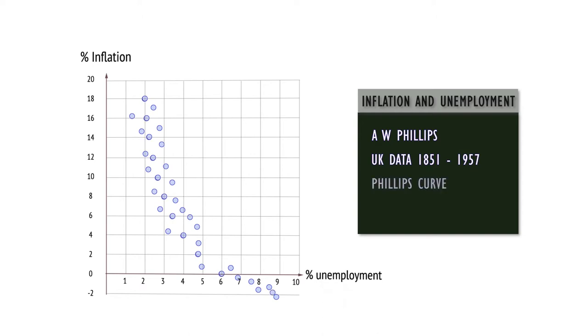Graphically, each dot represents a year of data, with the Phillips Curve the line of best fit for the data.